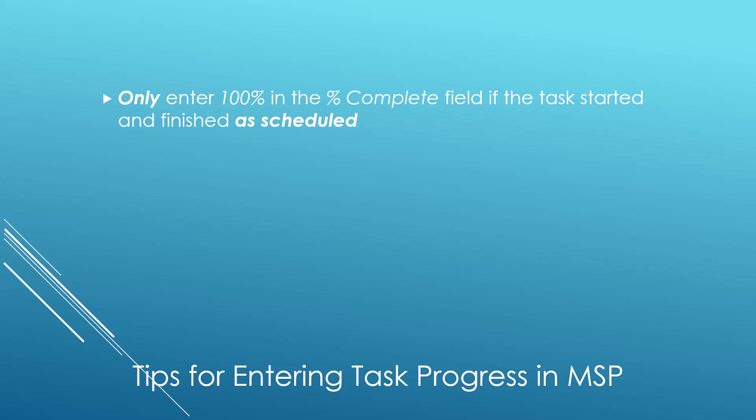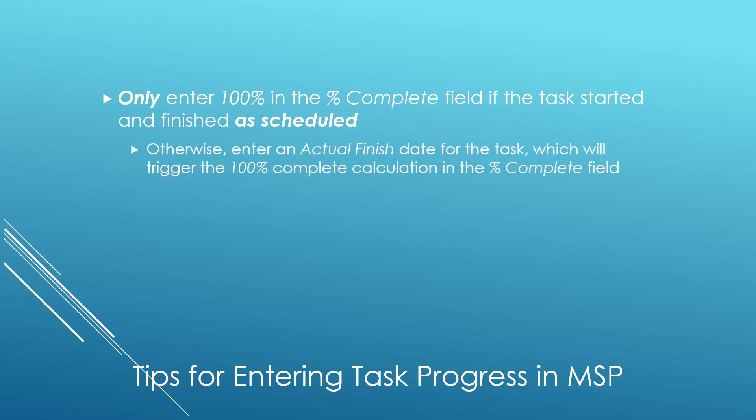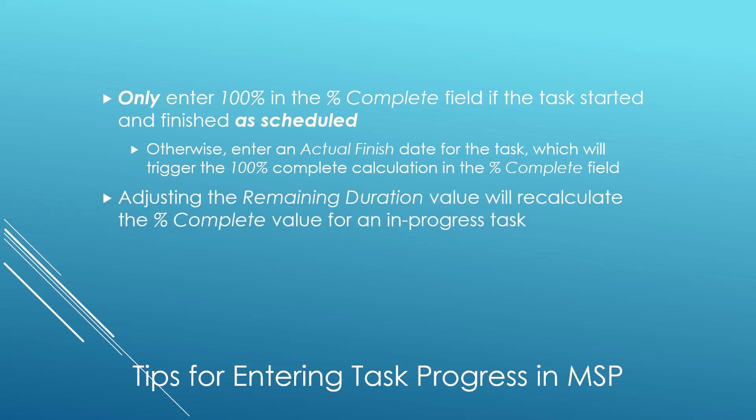Now let me give you a few tips for entering task progress in Microsoft Project using this methodology. First of all, only enter a 100% complete value in the Percent Complete field if the task actually started and finished as currently scheduled. Otherwise, you should always enter an actual finish date for the task.